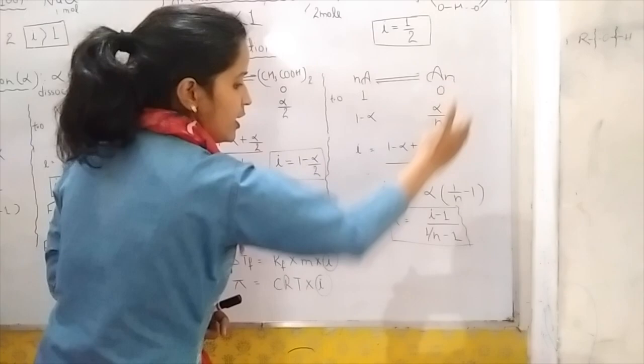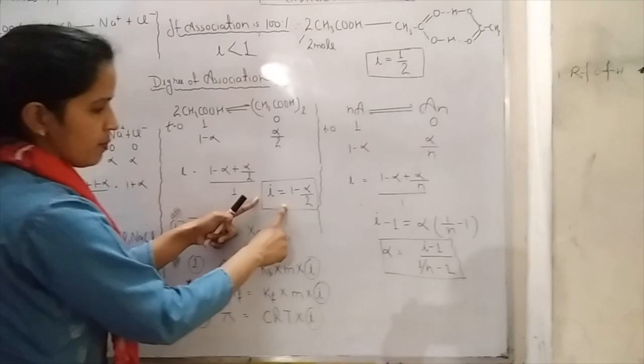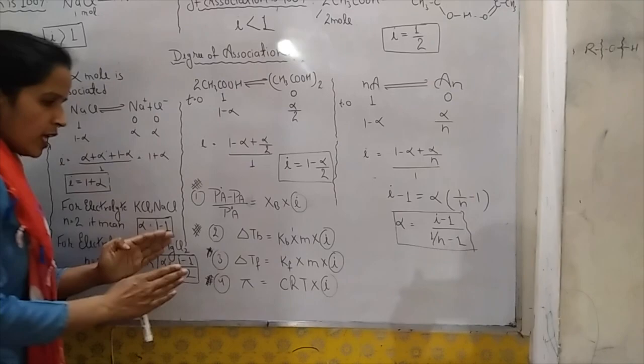Here N is the number of molecules associating. For the example of ethanoic acid (CH₃COOH), N = 2. If we put N = 2, we get i = 1 − α/2. This is proved here.